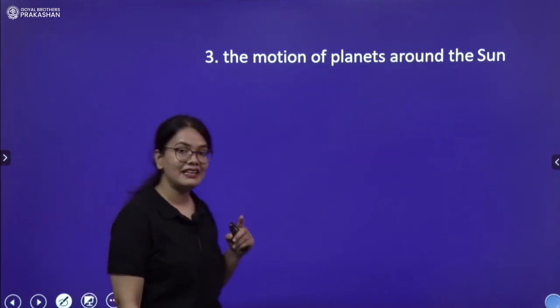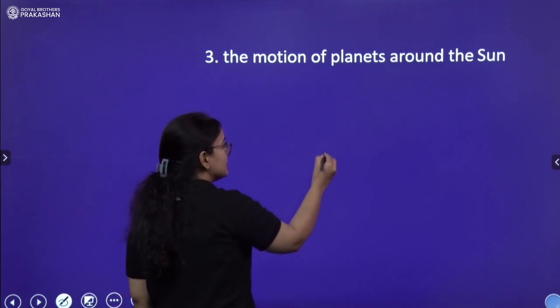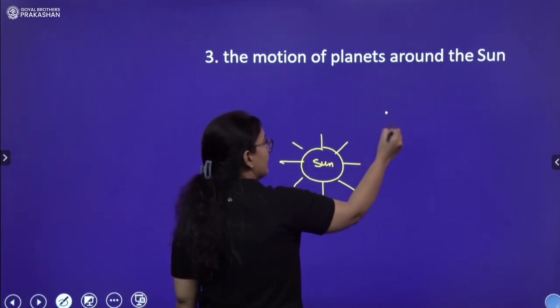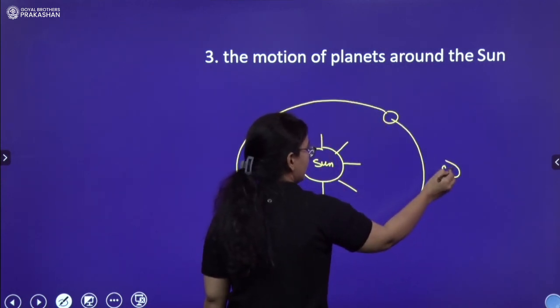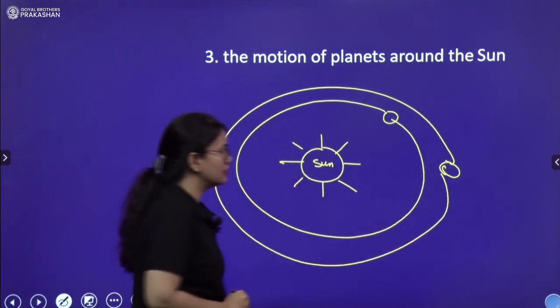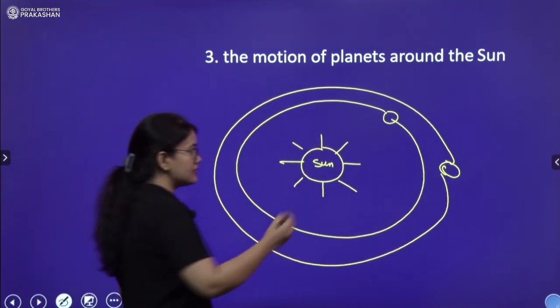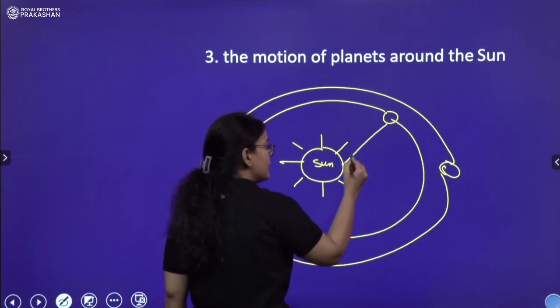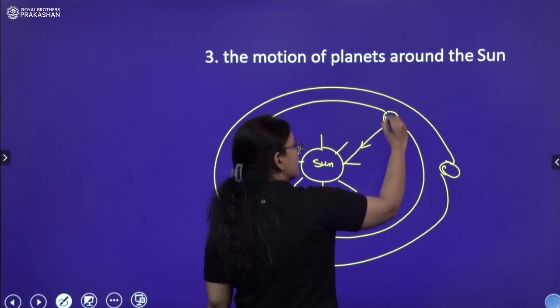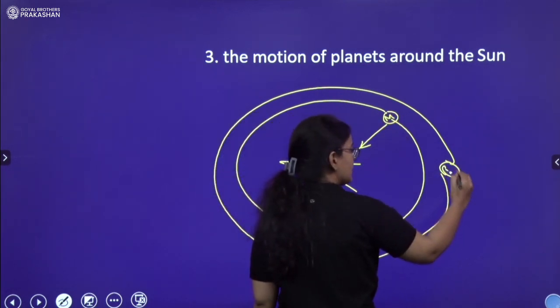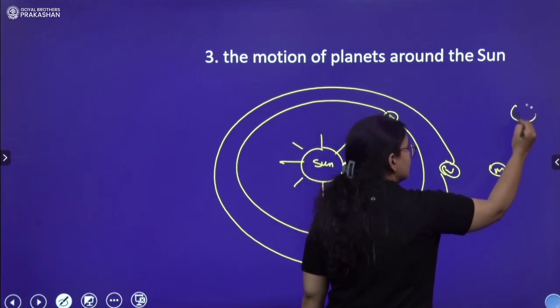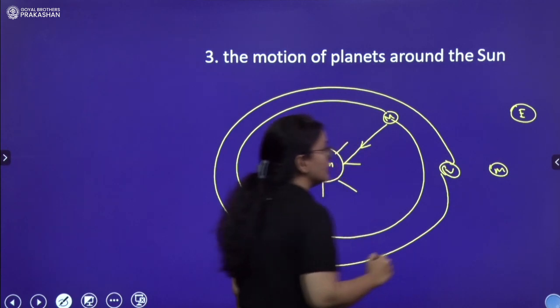Third, the motion of the planets around the sun. See this is sun and you have eight planets, many planets, eight planets who are making the orbit around the sun. How are they making orbit around the sun? It is the gravitational attraction between sun and the planet. Let us say this is Mercury, this is Venus, let us say this is Mars and here you have earth so on and so forth.